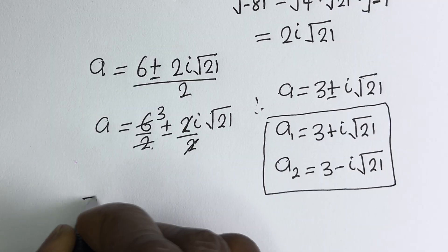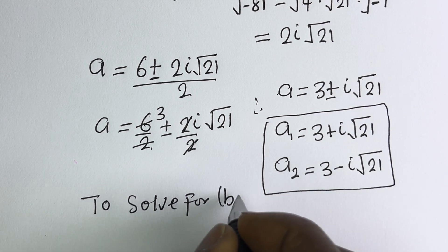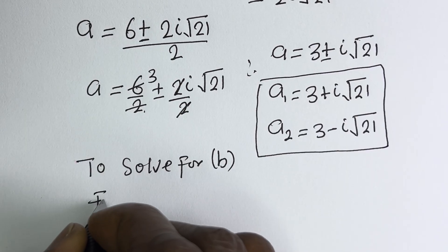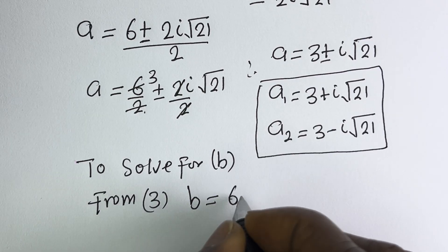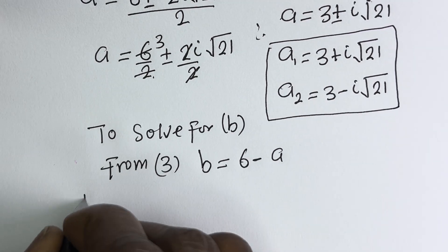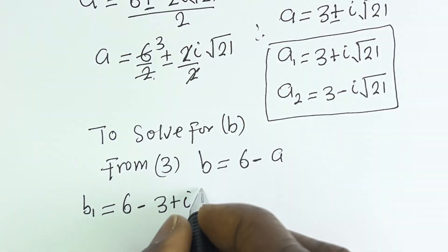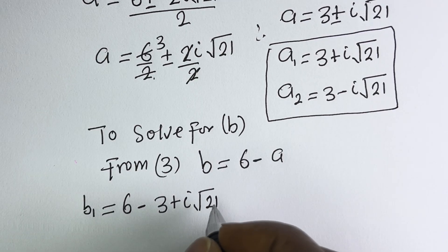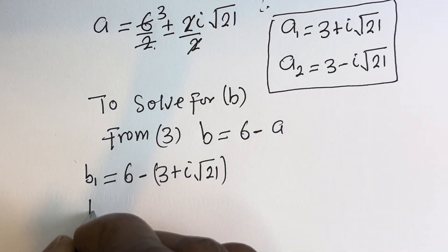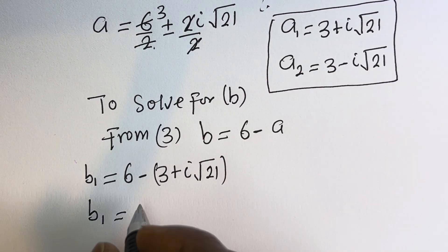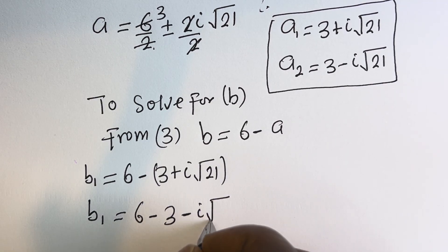Let's solve for B. To solve for B, we use equation 3: B equals 6 minus A. So B₁ equals 6 minus A₁, which is 6 minus (3 plus i square root of 21), giving B₁ equals 3 minus i square root of 21.